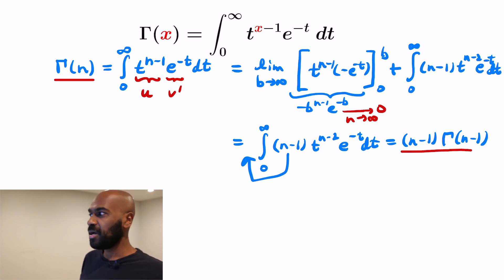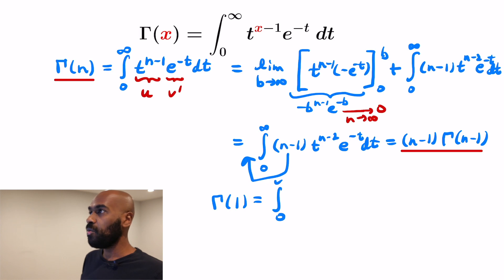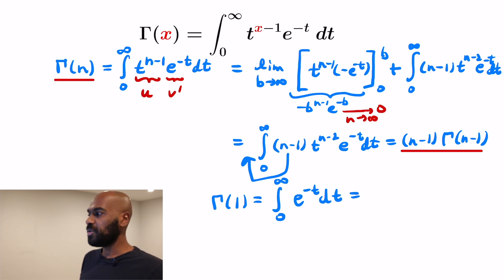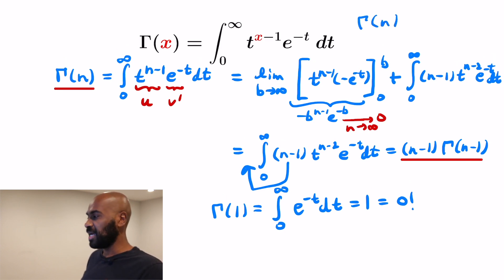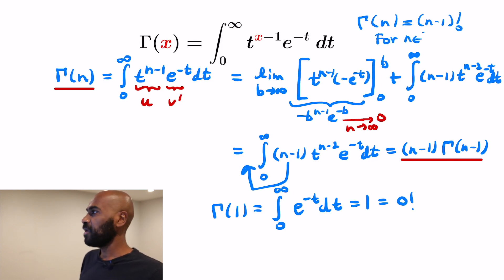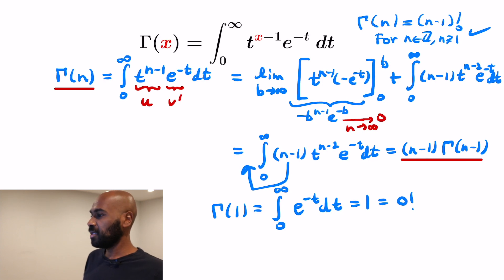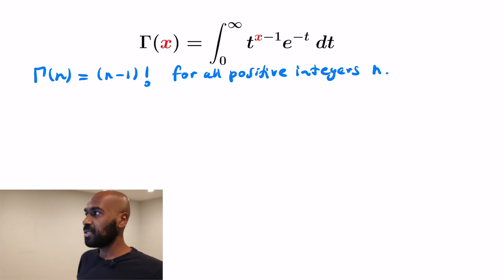If we bring that n minus 1 outside, we're left with an integral that looks like what we had but with n minus 2 in place of n minus 1, so it's gamma of n minus 1. We now have this cool relationship: gamma of n equals n minus 1 times gamma of n minus 1. If we check gamma of 1, it's the integral from 0 to infinity of e to the negative t dt, which equals 1 — that's 0 factorial. Using this inductively, we see that gamma of n is n minus 1 factorial. This gamma function gives us factorials for natural numbers n, just off by one index.